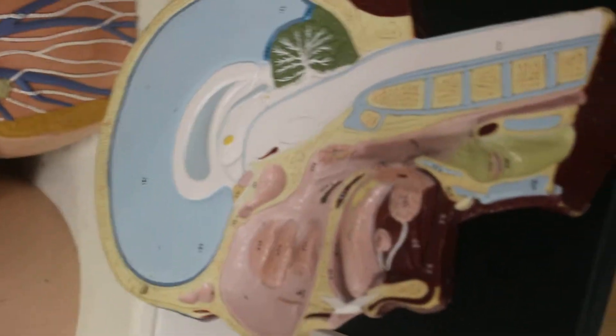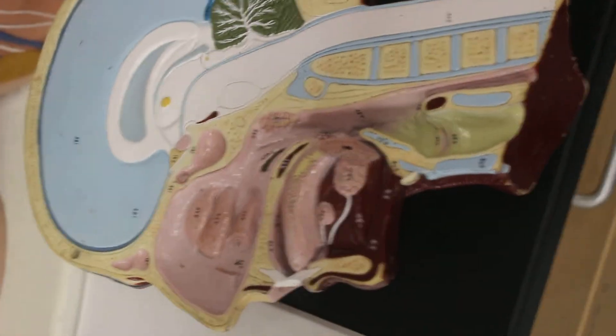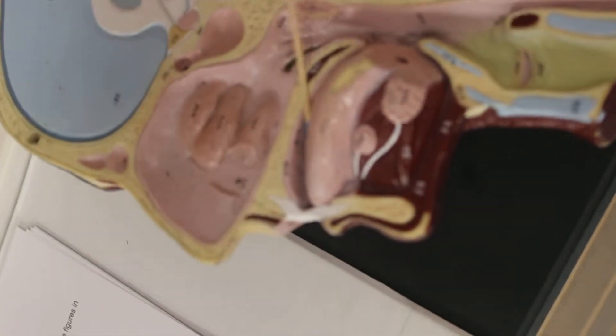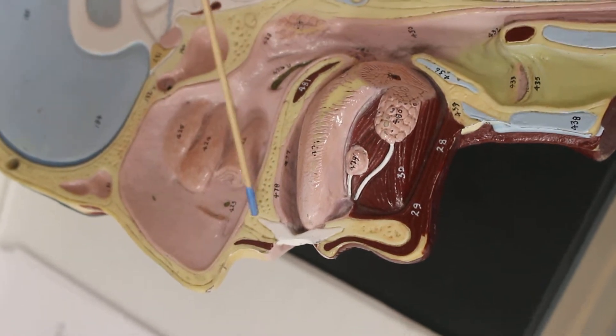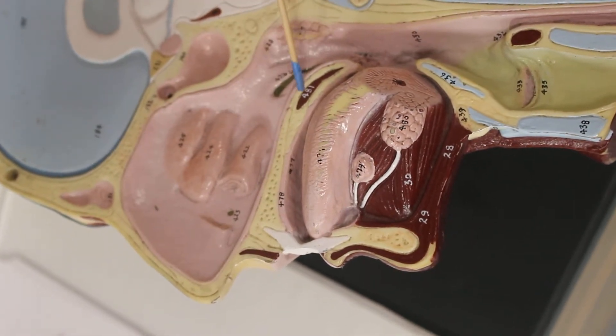Over here is the head of the torso model, sagittal section. Over here is the oral cavity. This is the tongue, the hard palate, the soft palate.